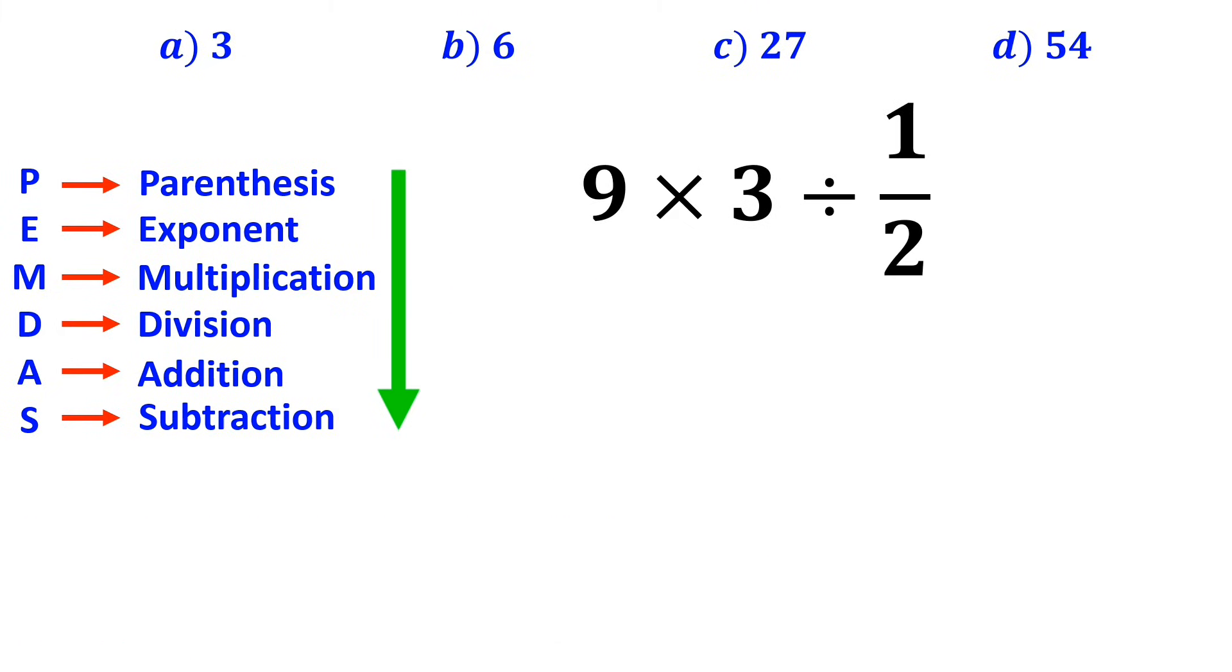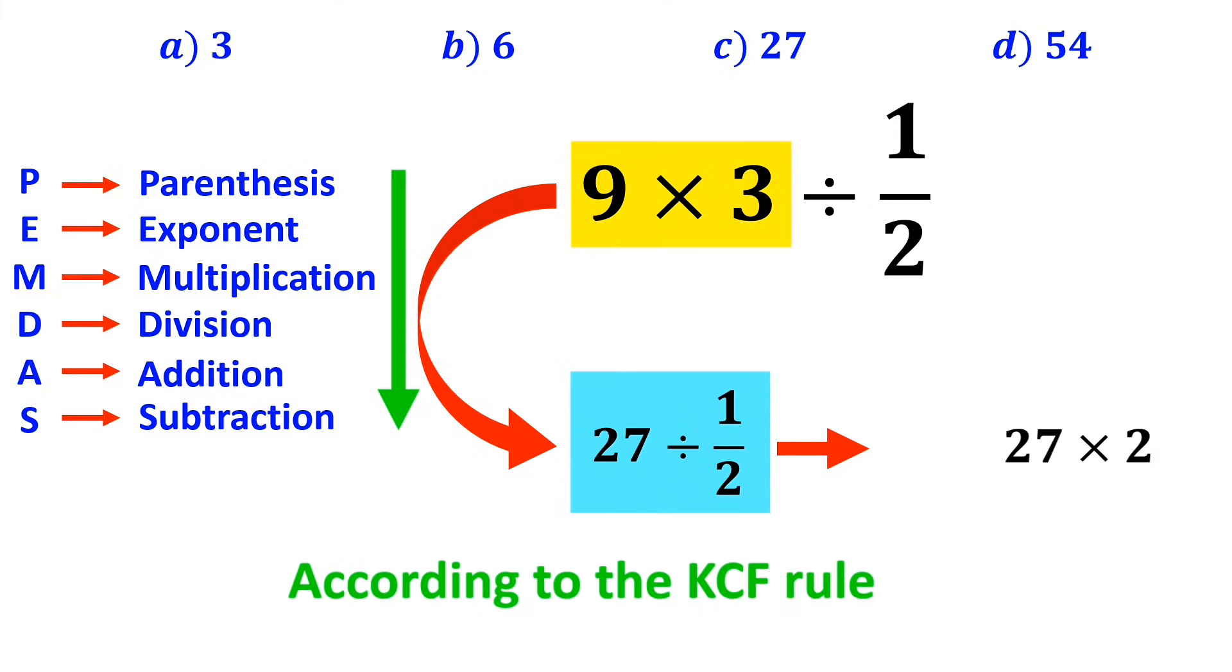In the next step, we multiply 9 by 3, which simplifies it to 27 divided by 1 over 2. And for the part which I have highlighted in blue, according to the KCF rule, we write it as 27 times 2, which results in the final answer 54.